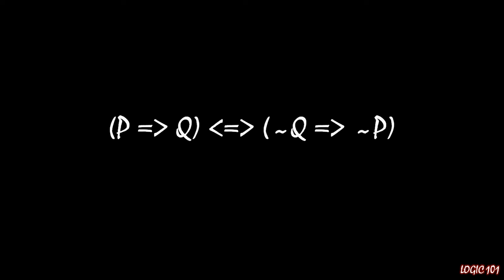As it turns out, these two statements are logically equivalent. In this lecture, I'm going to explain why this is true in English, then show you why this is true in a visualization, and then prove to you that this is true using a truth table. If P then Q is the exact same thing as saying if not Q then not P.